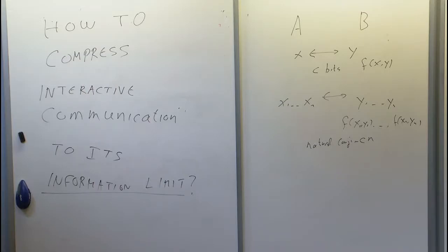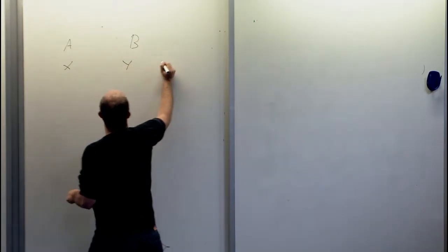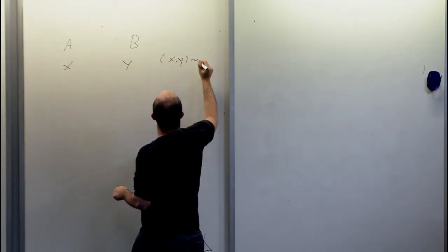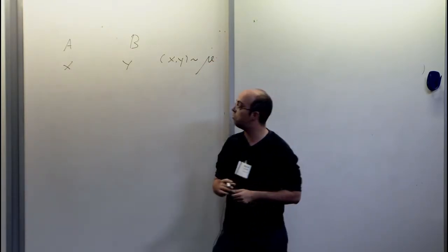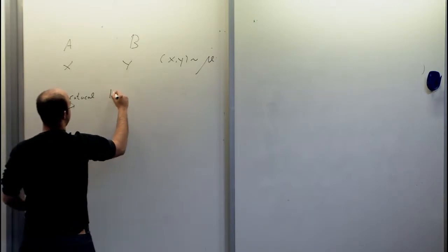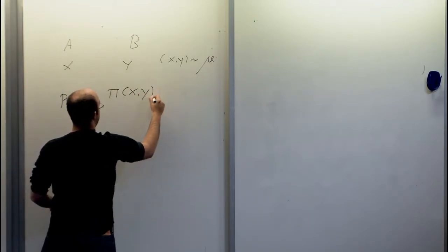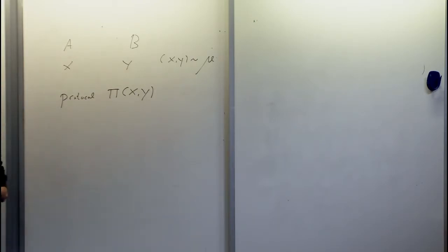There are two natural ways to measure the information of an interactive protocol. Let me define the setup: we have two players, Alice and Bob, with inputs x and y sampled from some distribution μ known in advance — typically correlated. We have some protocol π(x,y) that the parties use to compute some function, and viewing the transcript tells us the value of that function.